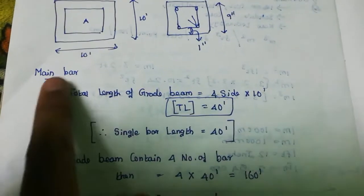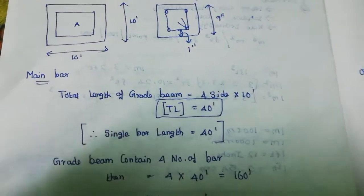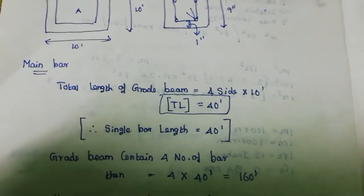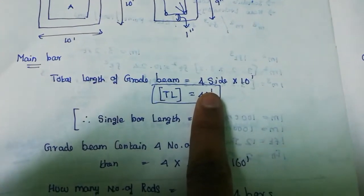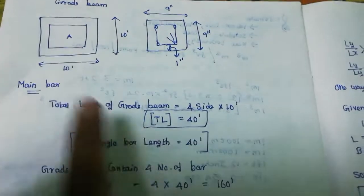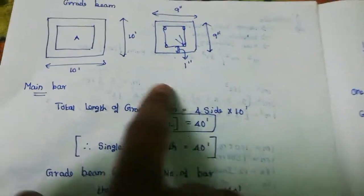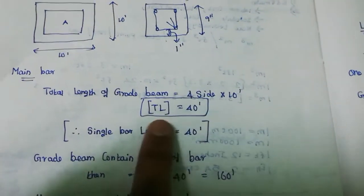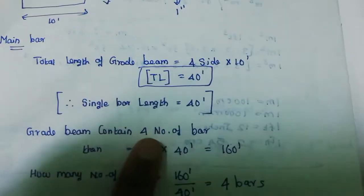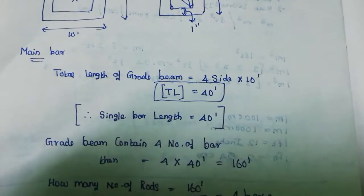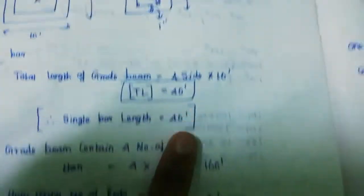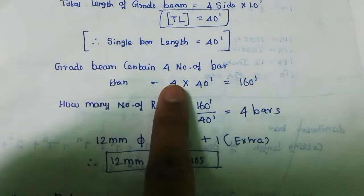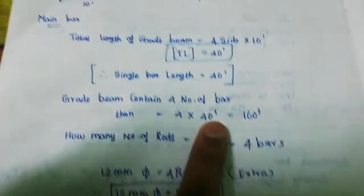Now we will tell you about the main rod and the distributed rod. The total length of the grade beam is 4 sides. The size is 4 sides into 10 feet, so the total length of the grade beam is 40 feet.